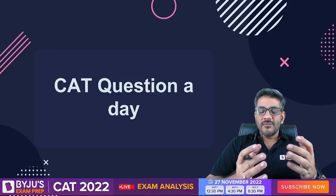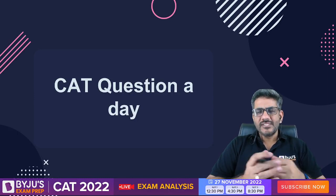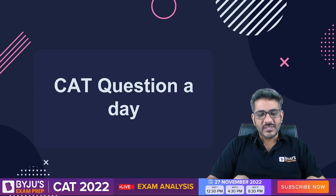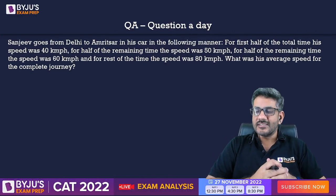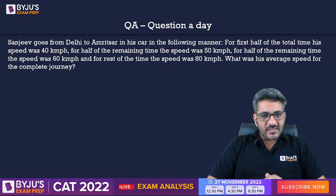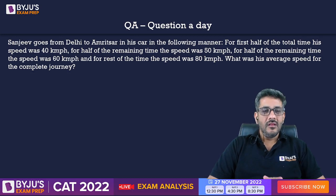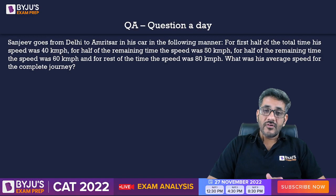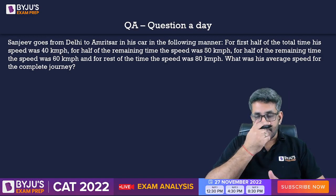Hello guys, welcome to CAT Question a Day series, in which we discuss a question for CAT every day. Today's question is based upon time, speed, and distance. Sanjeev goes from Delhi to Amritsar in his car in the following manner: for the first half of the total time, his speed was 40 km/h; for half of the remaining time, the speed was 50; for half of the remaining time, the speed was 60; and for the rest of the time, the speed was 80.